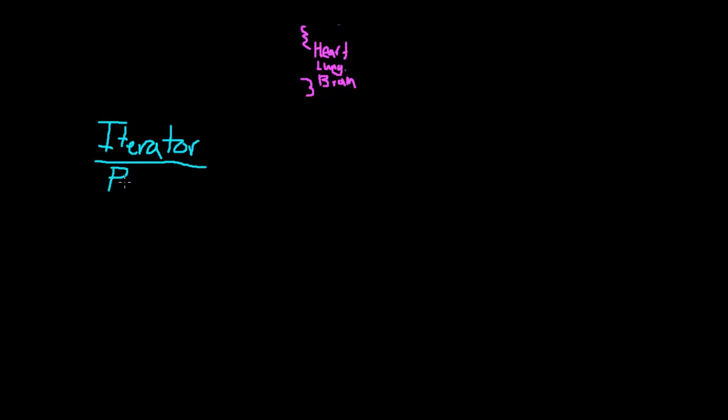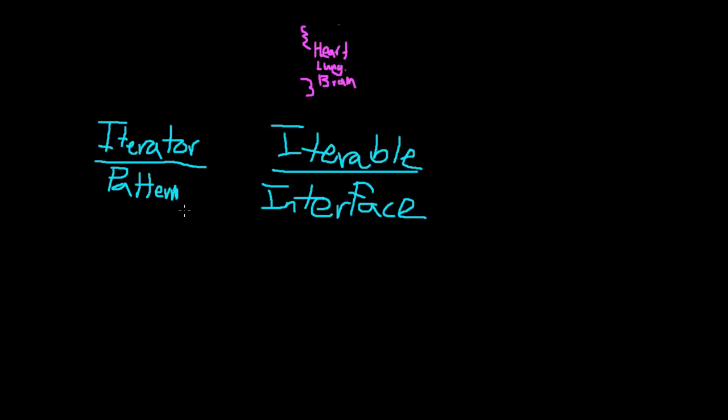Iterator is the actual pattern name. It's the name of this design pattern. Iterable is an interface that anything that's, so it's an interface, pretty much, that you implement. So, you would use the iterator pattern, in theory, but you would be directly implementing the iterable interface. So, keep track between the difference between these two words. Iterator is the design pattern. Iterable is the interface that the design pattern uses.